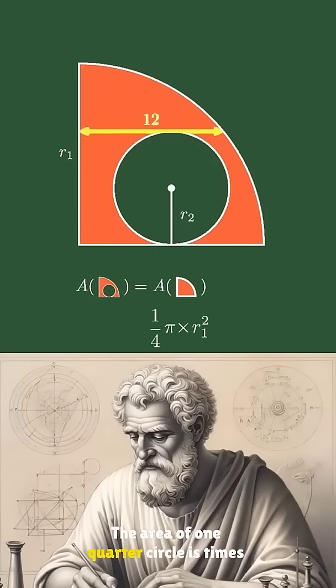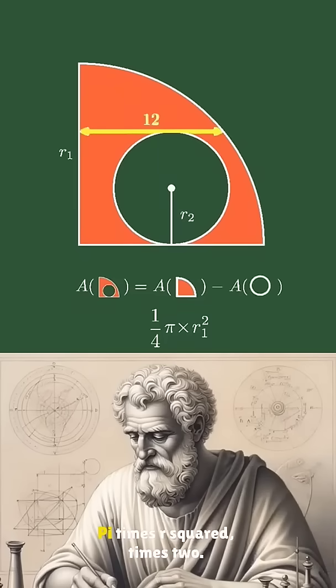The area of one quarter circle is π times r1 squared divided by 4. The area of the small circle is π times r2 squared.